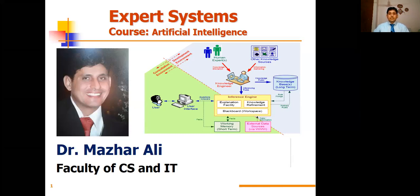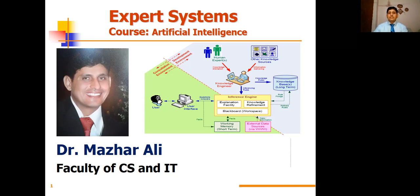In Artificial Intelligence, an expert system is a computer system that emulates the decision-making ability of human experts. Expert systems are designed to solve complex problems by reasoning through bodies of knowledge, represented by if-then rules, rather than conventional procedural code. An expert system is a computer program that attempts to imitate experts' reasoning process and knowledge in solving specific problems.